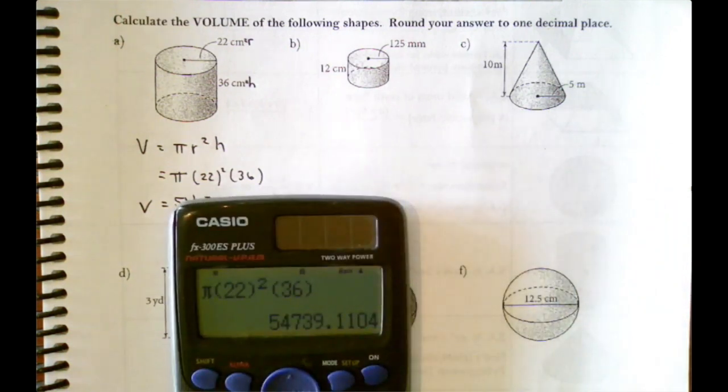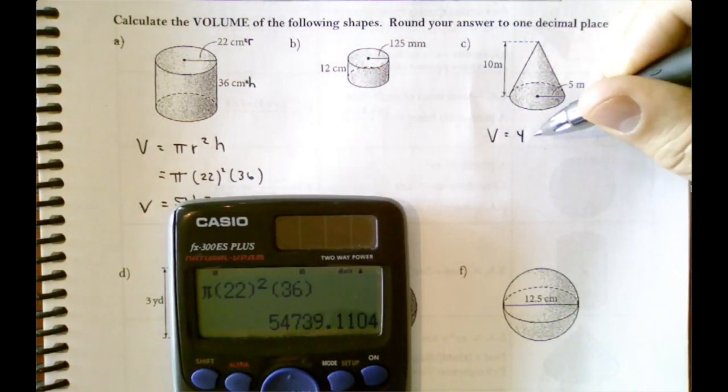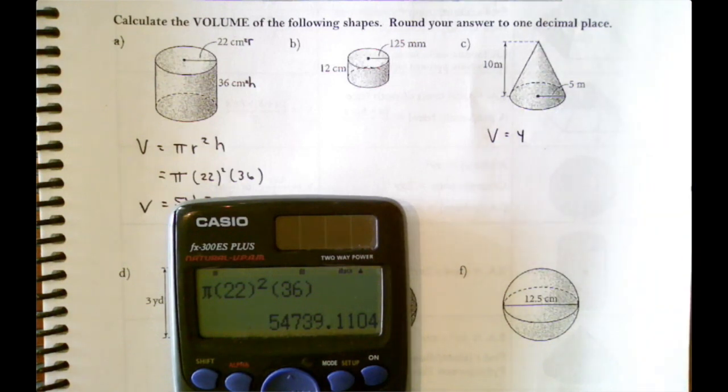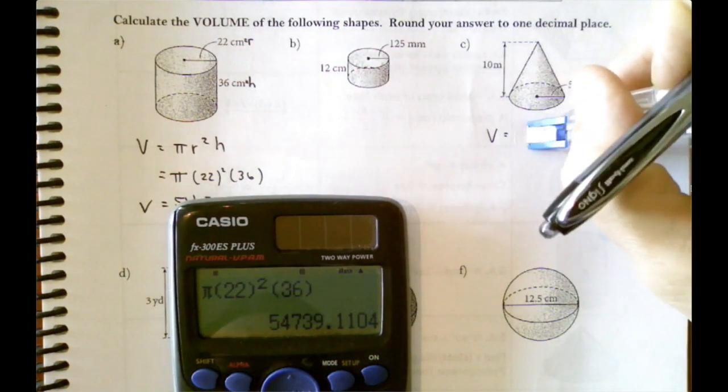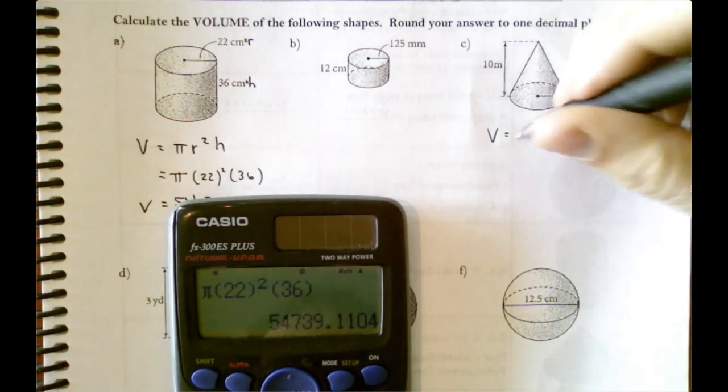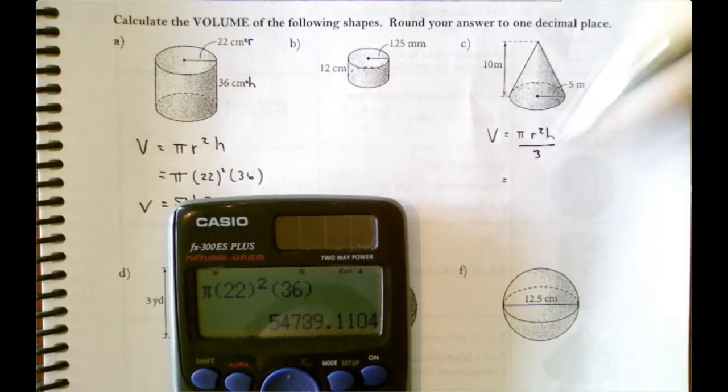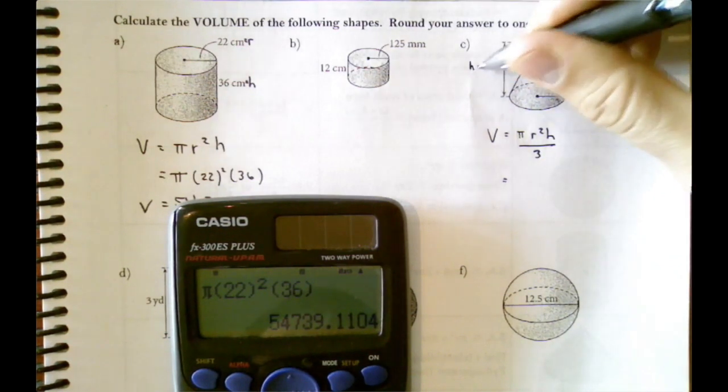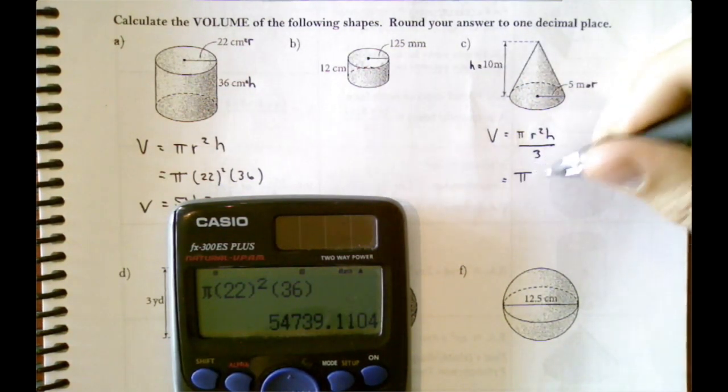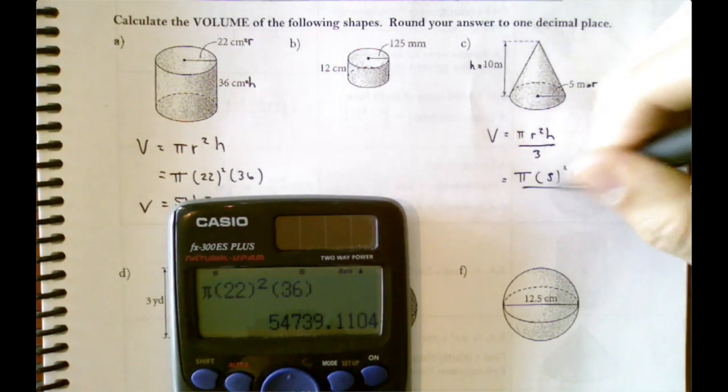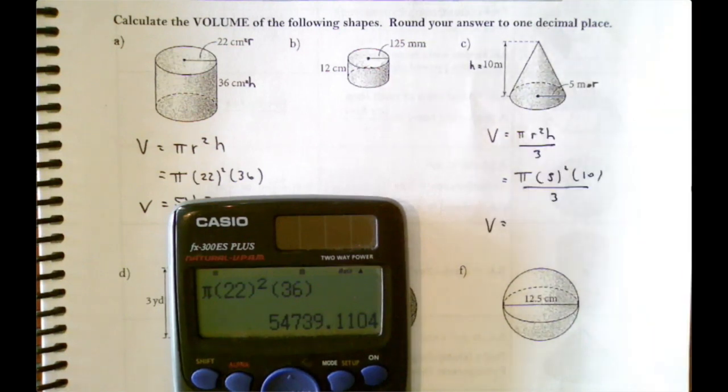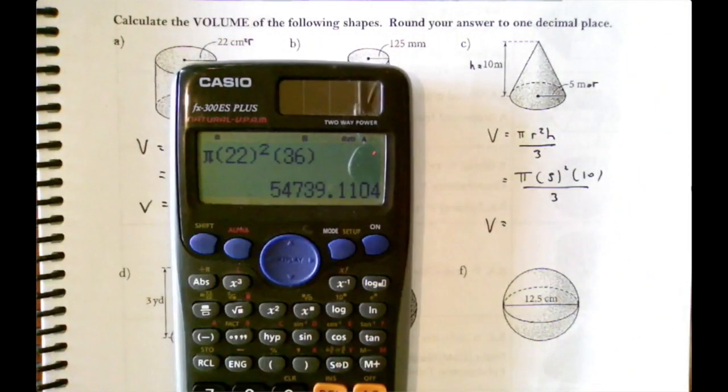Let's try a cone. The volume of a cone is, that's wrong. It's just pi r squared h divided by three. Our r is of the circle, our height is of the cone. No Pythagorean theorem. Pi five squared times ten divided by three, pretty straightforward for volume.